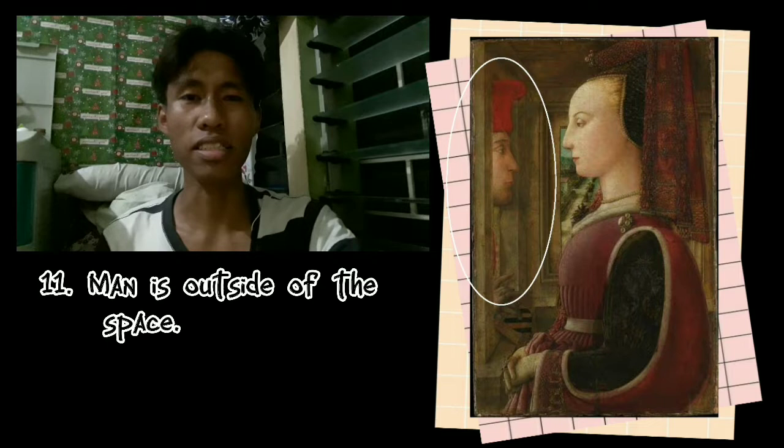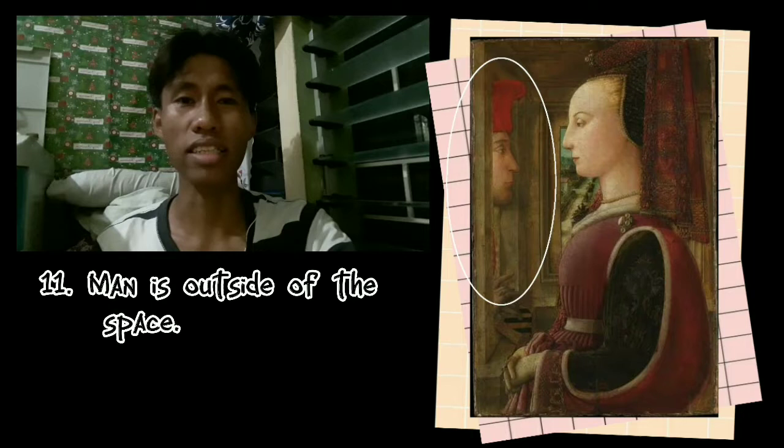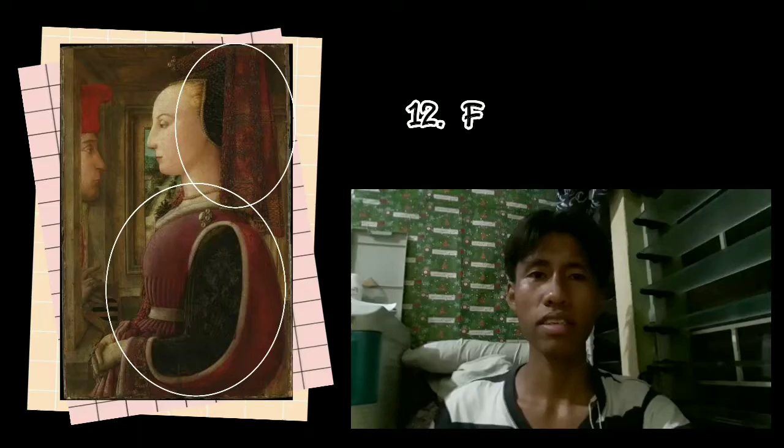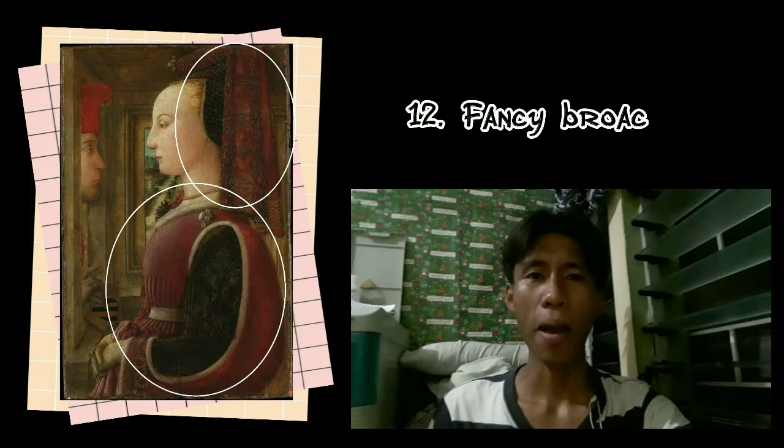The man is outside of the space. Two figures occupy different planes in space, with the female figure dominant and the male in a subordinate position as an observer. He was not only an observer but an interlocutor. Fancy brooch and fancy clothes — the man is looking inside and appreciating.